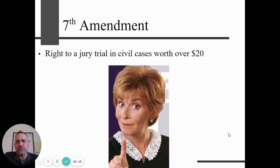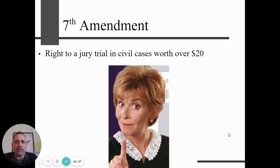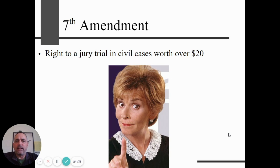The Seventh Amendment — think Judge Judy, though she's not actually a real judge anymore. The Seventh Amendment says that if you are in a civil case — as opposed to a criminal case where someone says you broke the law — a civil case is when someone sues someone else, like your dog biting your neighbor. If you are in a civil case worth over $20, you can request a jury.